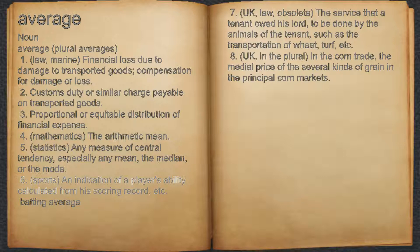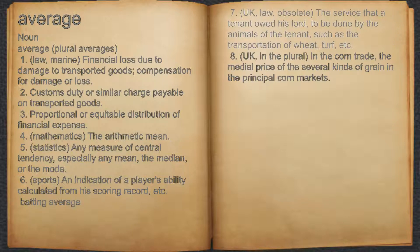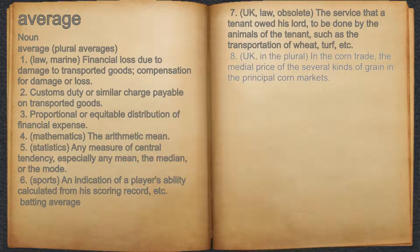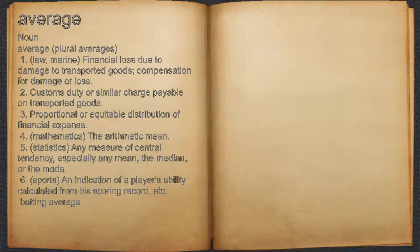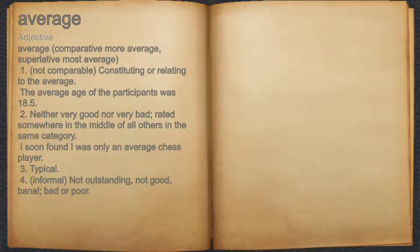Six: sports — an indication of a player's ability calculated from their scoring record, for example batting average. Seven: UK law, obsolete — the service that a tenant owed his lord, to be done by the animals of the tenant, such as the transportation of wheat, turf, etc. Eight: UK, in the plural, in the corn trade — the medial price of the several kinds of grain in the principal corn markets.